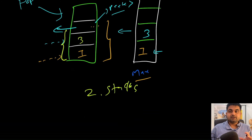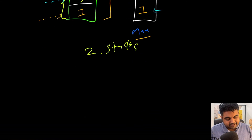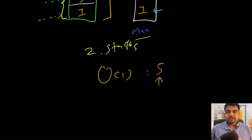This is the whole solution, and using this we can complete all five operations in O(1) time. So now let's quickly see the coding solution and then things will make much more sense.